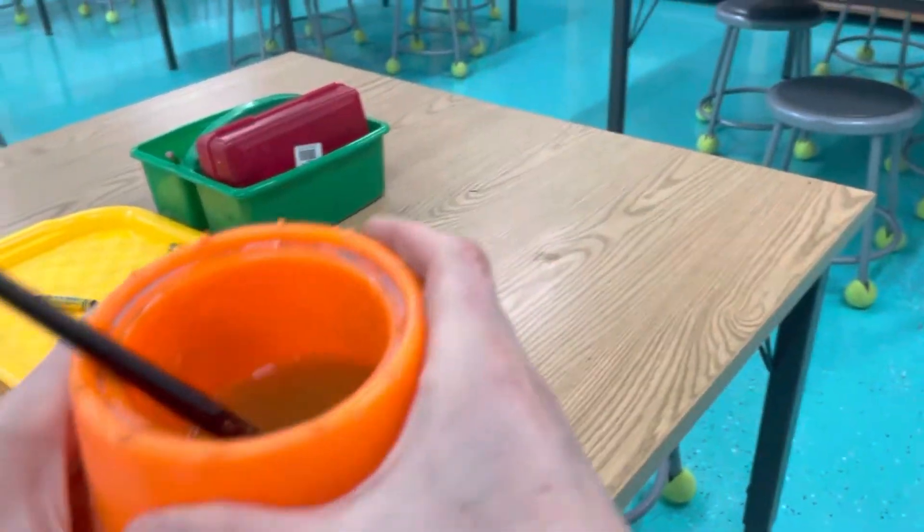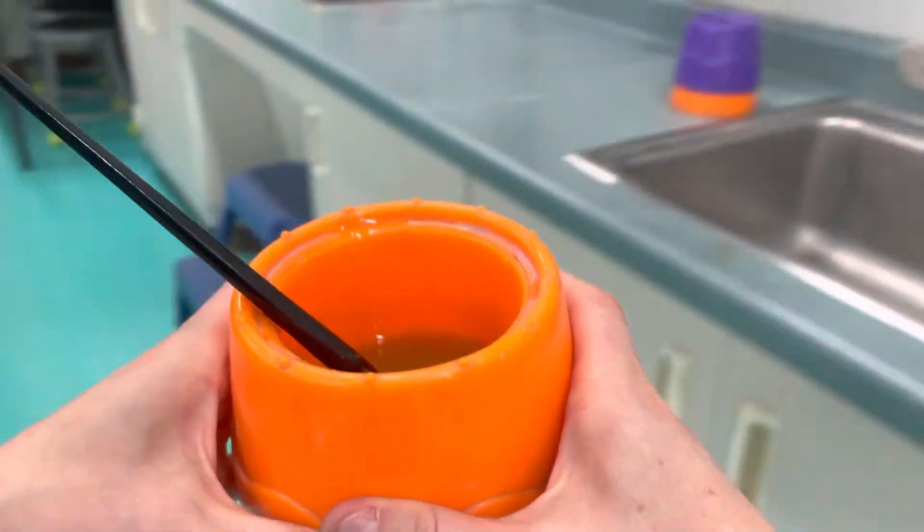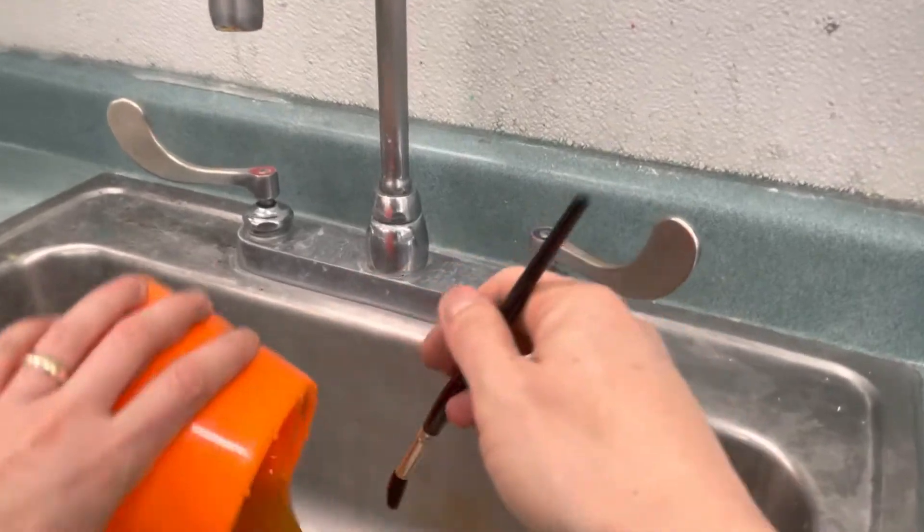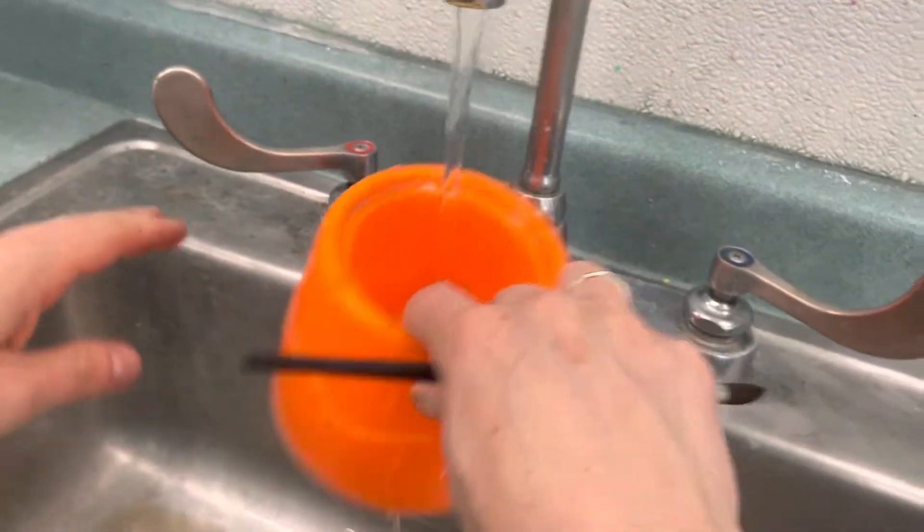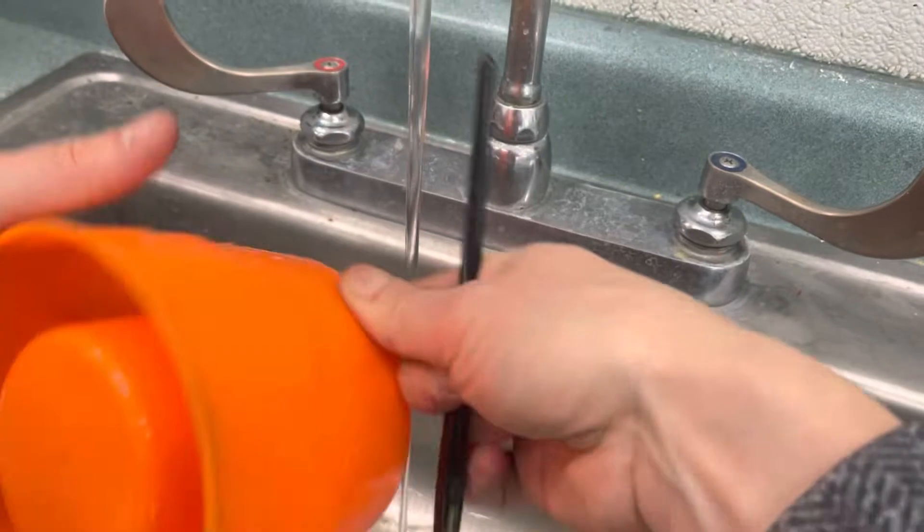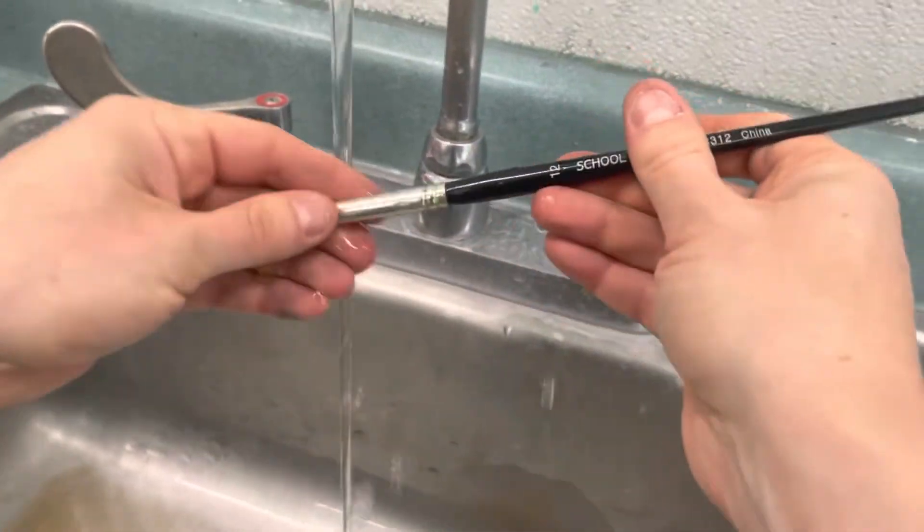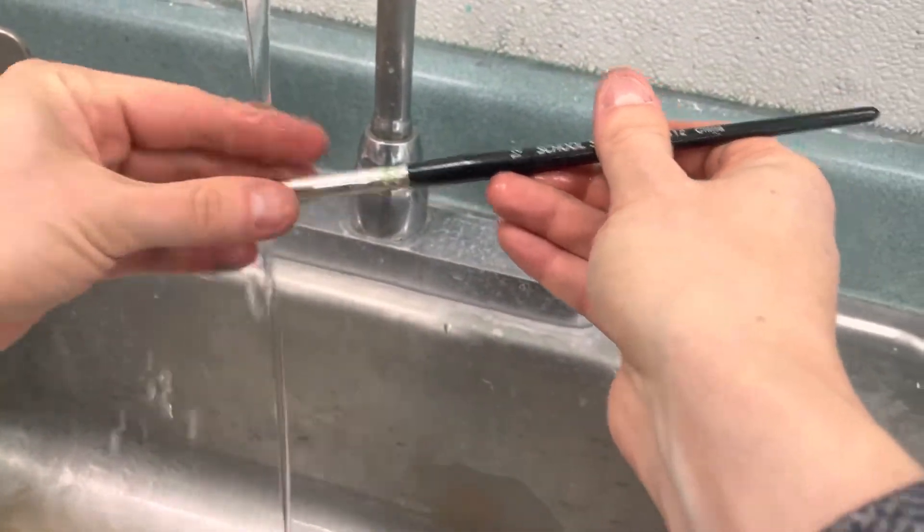And then you're going to take your water cup. Carry it with two hands over to the sink. Dump the extra water out. Please rinse out your cup. Make sure you get that extra paint out the bottom, and use your fingers to get the paint out of the bristles.